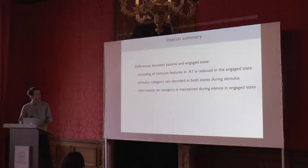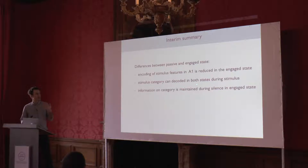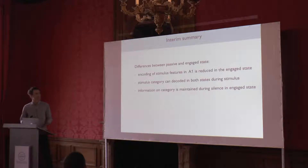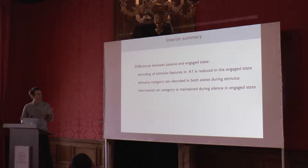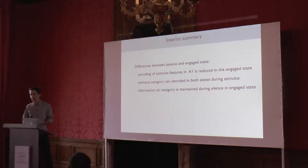That adds two more points to my list. The stimulus category — go and no-go — can be decoded in both states during the stimulus, but information about the category of the stimulus is maintained during the post-stimulus silence only in the engaged state and on correct trials. This decoding or categorization is a bit of an abstract measure — it tells us how well we can categorize, but not why we can categorize, and what is going on at the level of the neural dynamics. So we next wanted to understand better how the dynamics of the auditory cortex change between the two states, between passive and active.